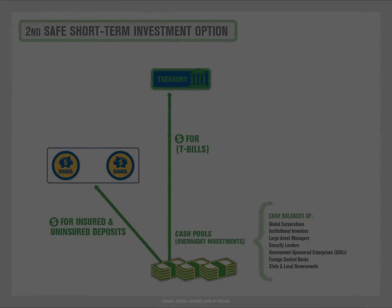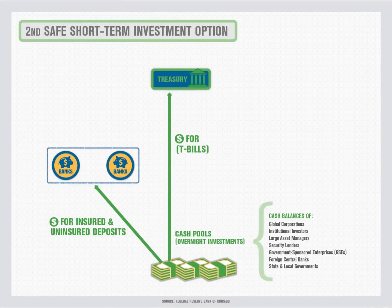For example, investors can hold bank deposits. Bank deposits have some appealing characteristics. Like cash, the value of a bank deposit doesn't fluctuate with interest rates, and they can be used to meet payment obligations. However, bank deposits above a certain amount are uninsured, which exposes large investors to counterparty risk. If the bank fails, these investors are likely to lose money. Therefore, as opposed to safe treasury bills, bank deposits are considered an unsecured overnight investment.